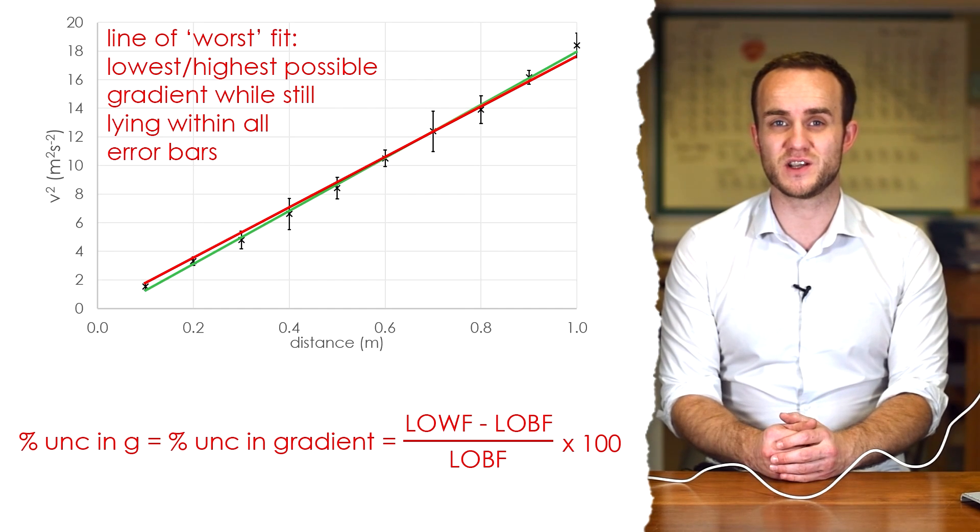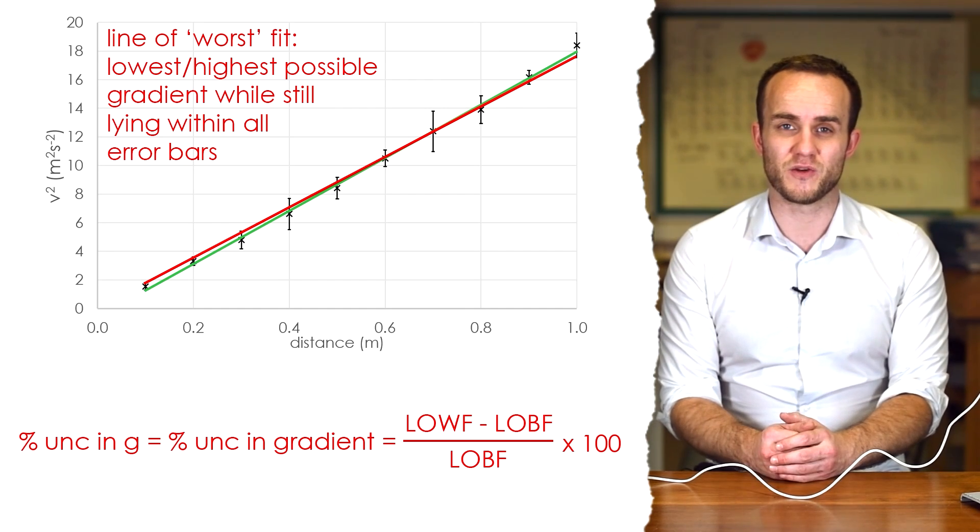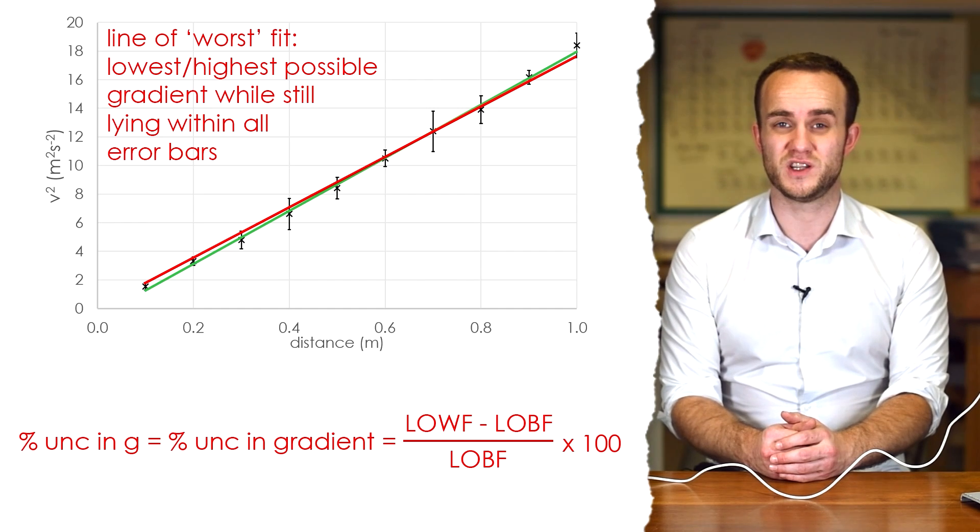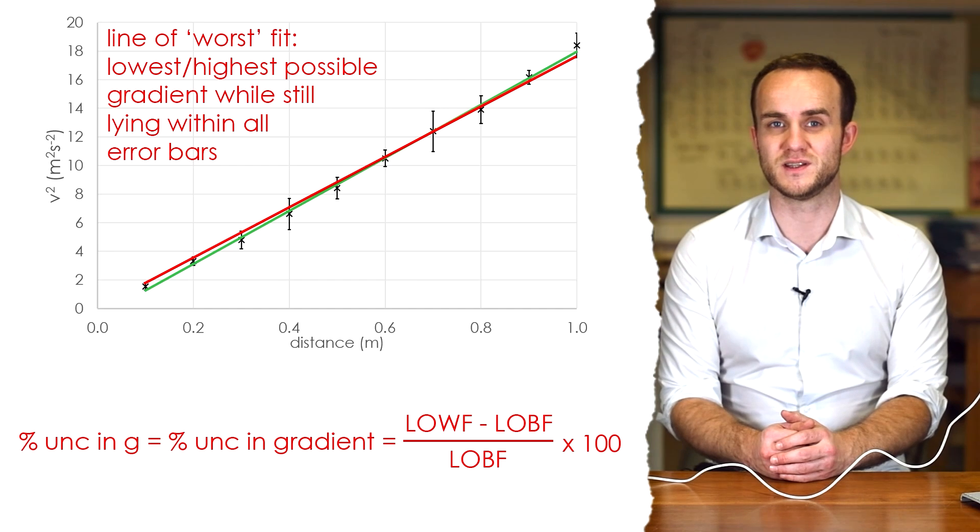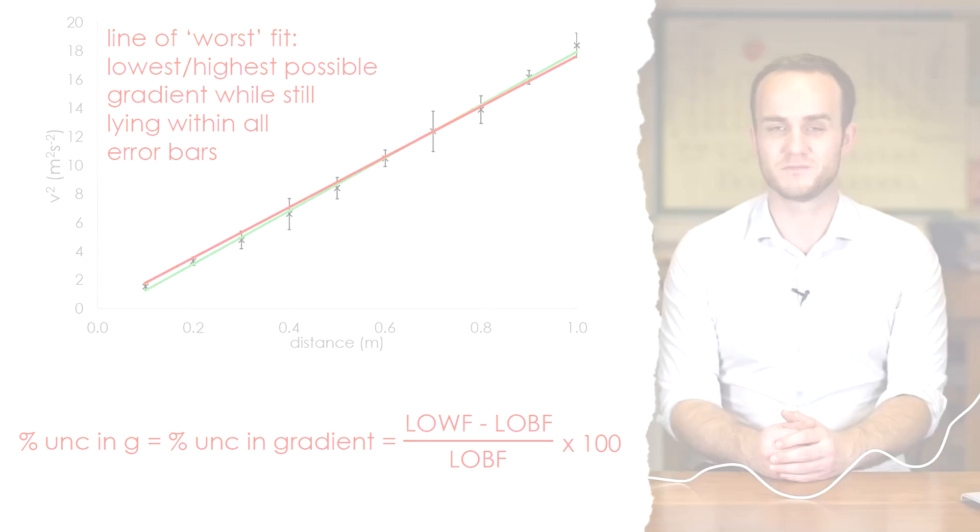Because this is just equal to 2G, that therefore means that that percentage uncertainty is going to be the same for G itself. And then you can therefore find a final absolute uncertainty in G from that.